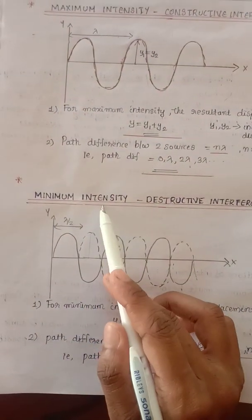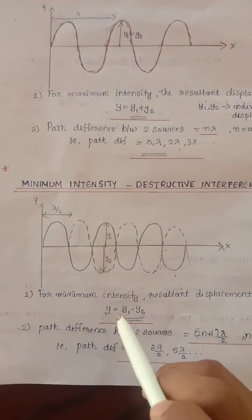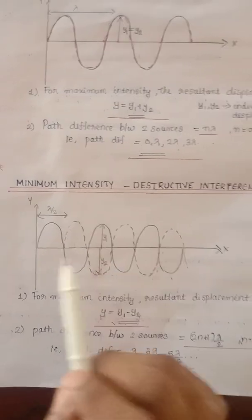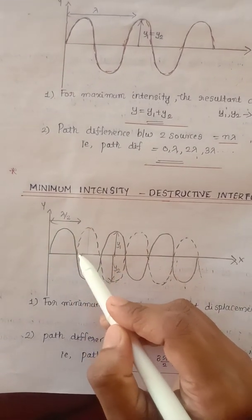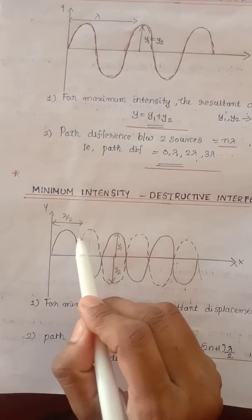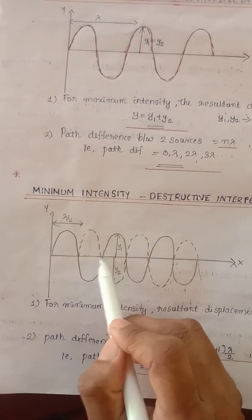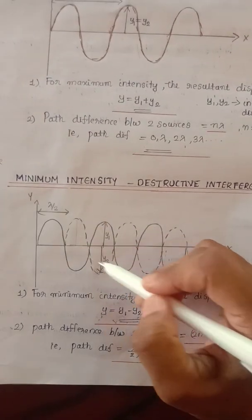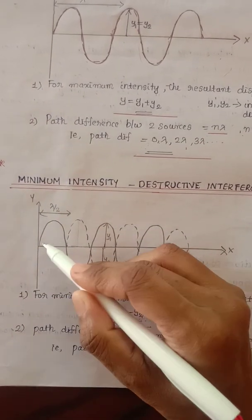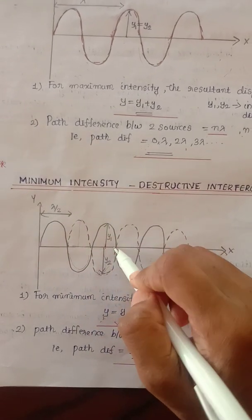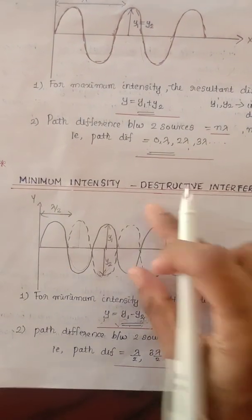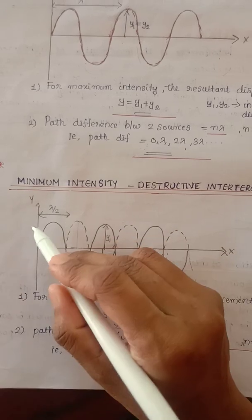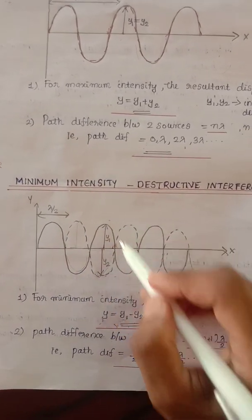The total displacement Y is equal to y1 minus y2. When the second wave travels a higher distance, what will be the path difference? Lambda by 2, lambda by 2, again lambda by 2 — so total path difference is 3 lambda by 2.